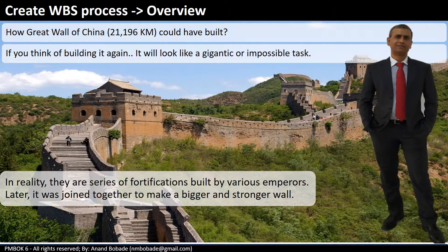In reality, they are a series of fortifications built by various emperors starting from the 7th century. Later they were joined together to make a bigger and stronger wall between 220 to 206 BC by the first emperor of China. Imagine this series of fortifications as high-level components, and collectively all components put together it becomes a 21,000 km long wall.